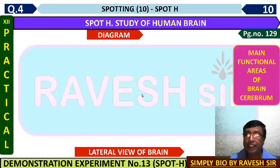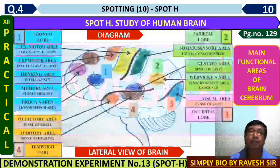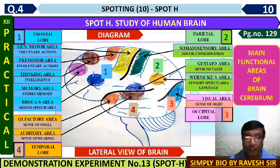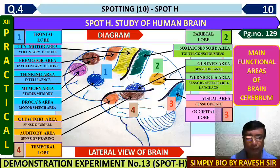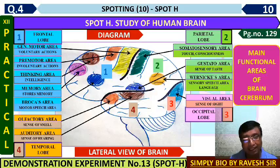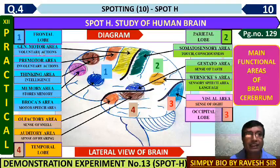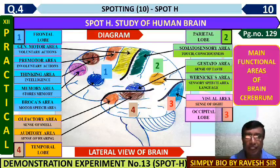The main functional areas of the cerebrum: these different areas will also help you in the theory examination and oral questions. You can take a screenshot of this slide and note it down. In the frontal lobe there is the general motor area shown in yellow color, the pre-motor area shown in reddish, the thinking area, and the memory area shown in pink color. The Broca's area is shown in blue color.